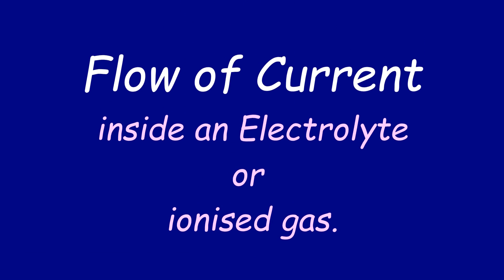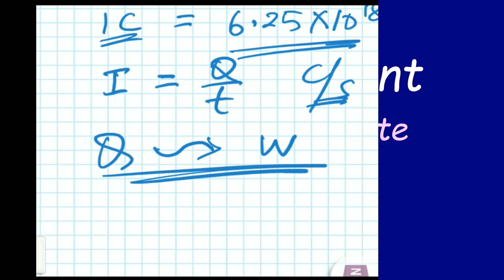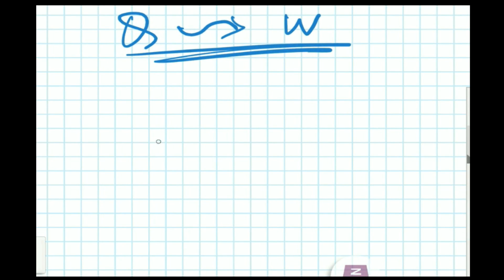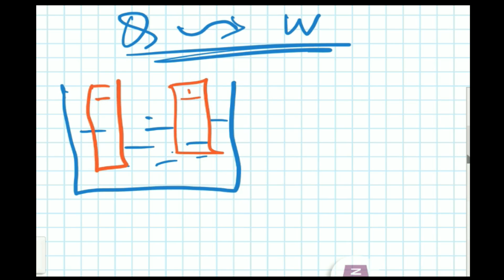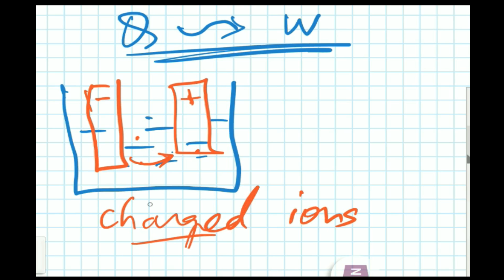What happens in case of electrolytes or ionized gases? In a lead acid battery there is an electrolyte and two plates — one negative and one positive. The ionized particles, that means charged particles, flow from one plate to another plate with the help of the ionized electrolyte. So here charged ions flow from one plate to another.